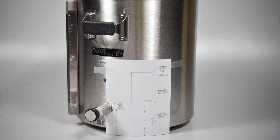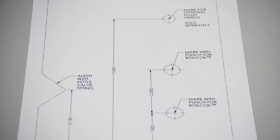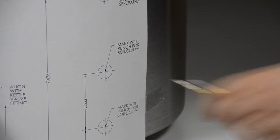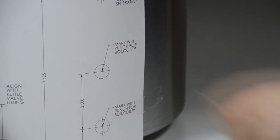Cut out and affix the hole location template as per the instructions provided on the template. This will be located on the very last page of the manual. After attaching the template, use an automatic center punch to mark the locations of the holes on the brew kettle.